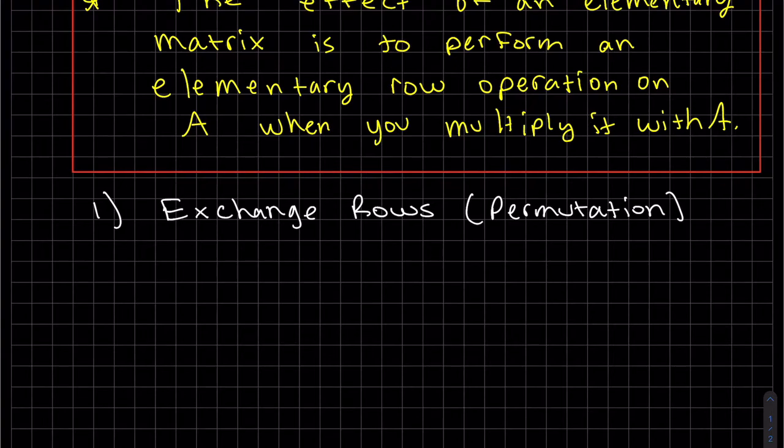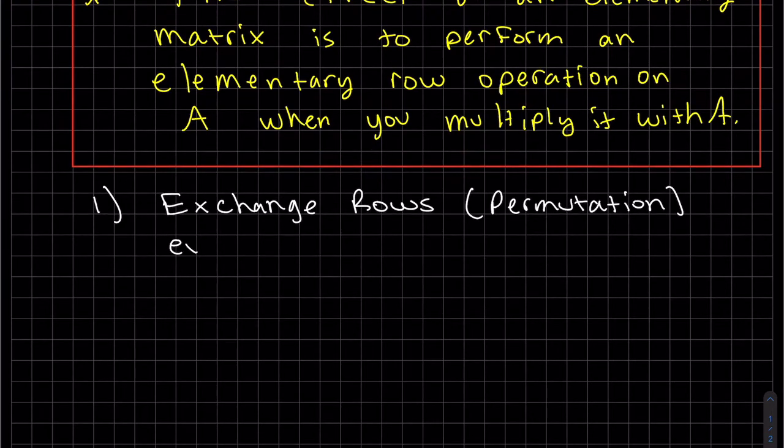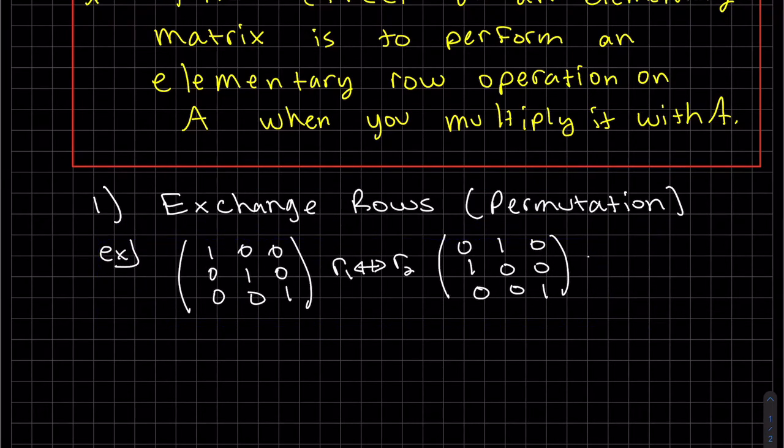When you exchange rows, it's called a permutation. So let's look at an example. Let's exchange row one and two and this is called permutation exchanging row one and two.